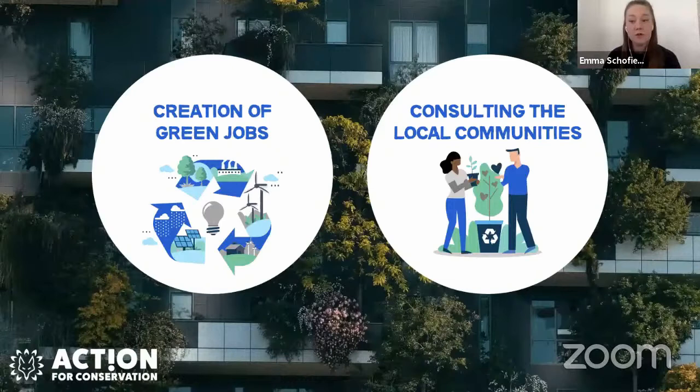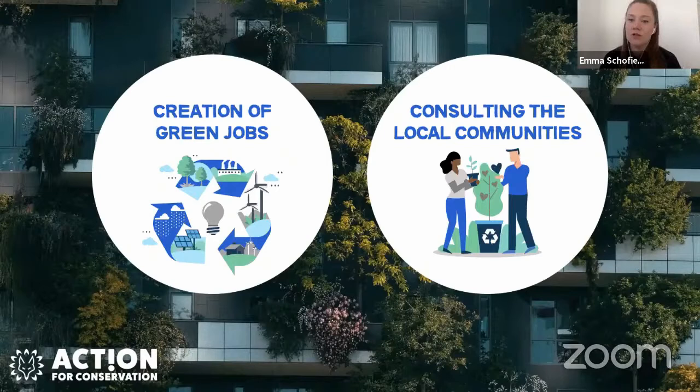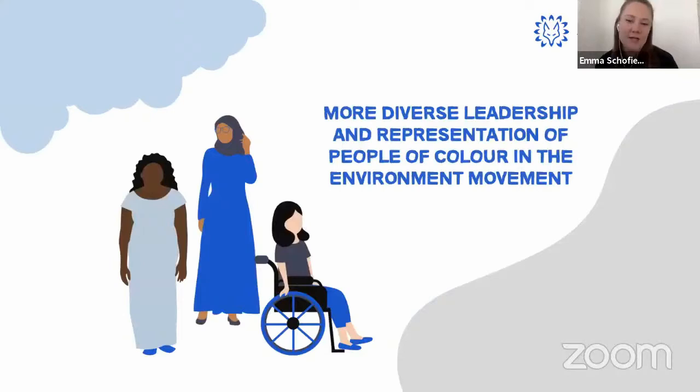Third, more consultations with local communities — asking questions like 'What are the local issues? Where are the green spaces needed?' When decision-making is happening about an area, power should be given back to local people. Often scientific evidence is taken into account but not traditional and indigenous knowledge. Fourth, more Black leaders and representation in the movement.